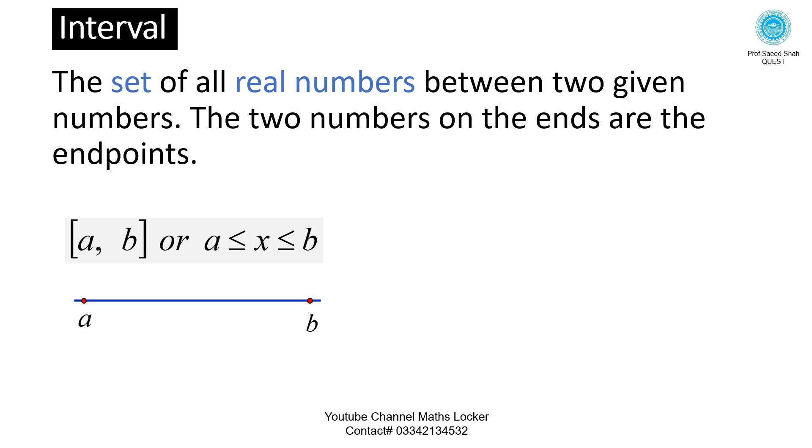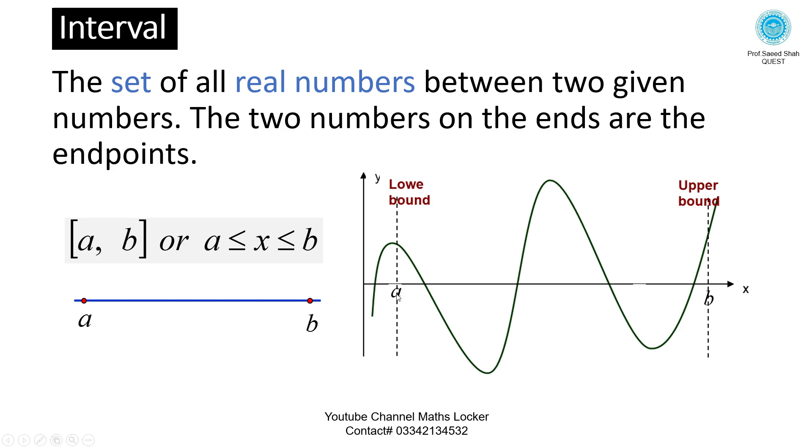In graphical form, if you have a function, you are marking two lines. One is x = a, then second line x = b. x = a is called the lower bound, and b is called the upper bound. This is called the interval [a, b].